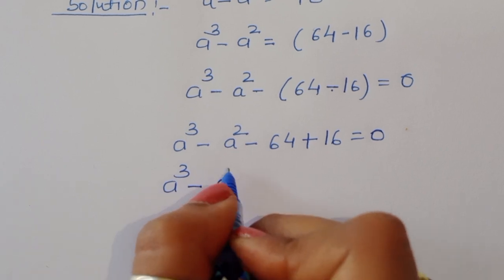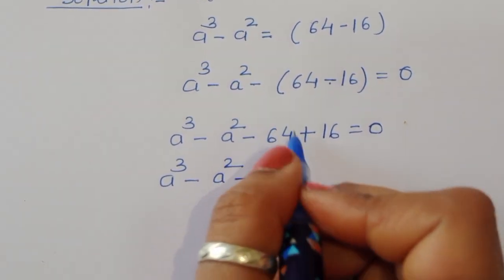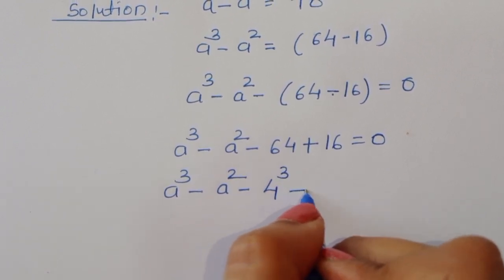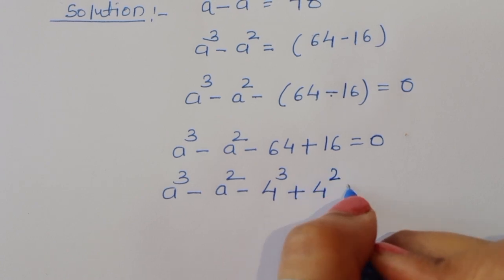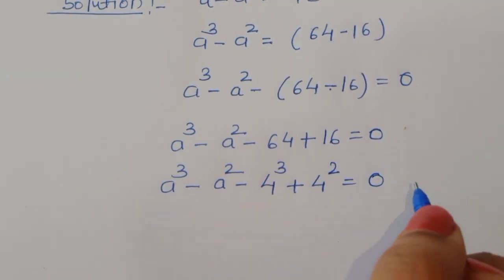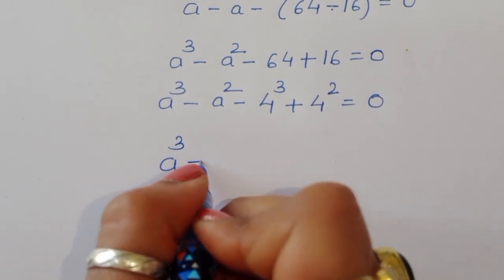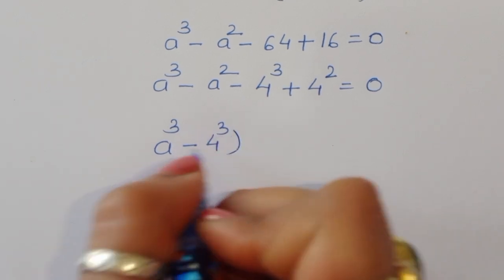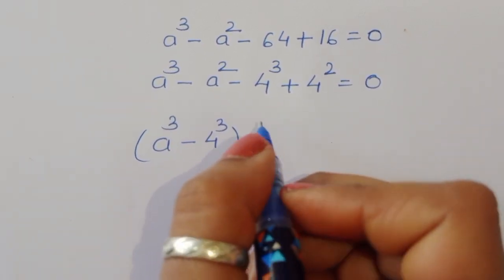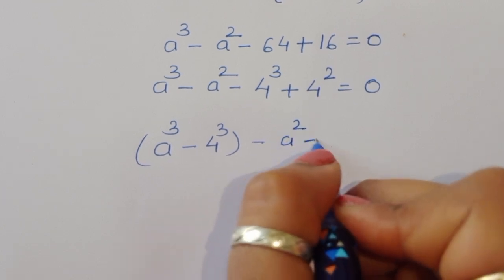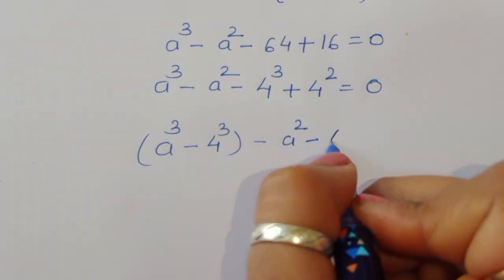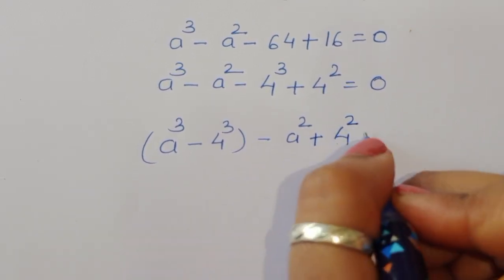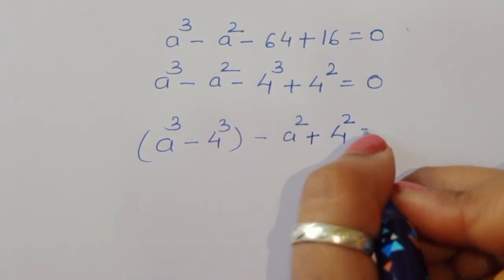Expanding: a³ - a² - 64 + 16 = 0. We can write 64 as 4³ and 16 as 4², so we group: a³ - 4³ - a² + 4² = 0, rearranging the cube terms and square terms.